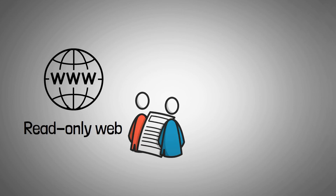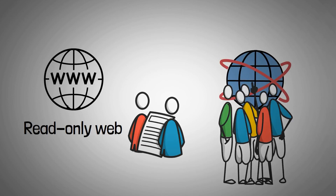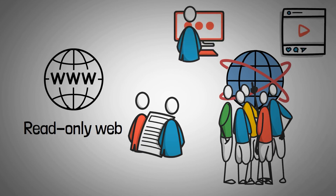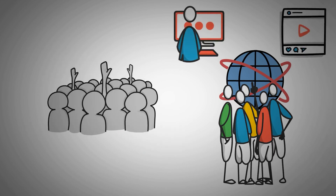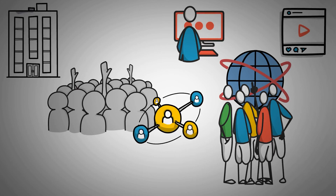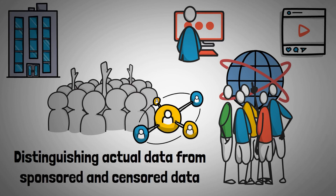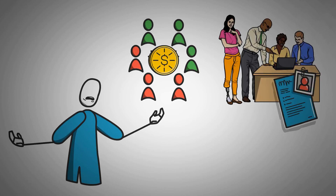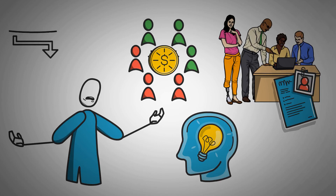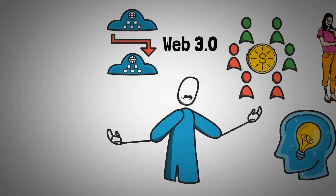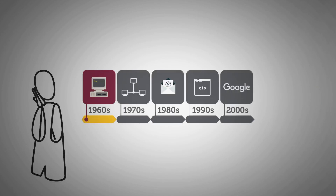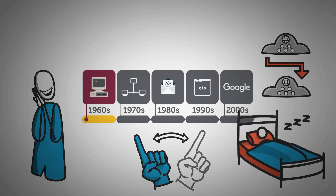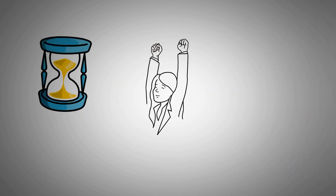In summary, Web 1.0 was merely a read-only web with a one-way flow of information. The arrival of Web 2.0 saw increased social collaboration between content creators and users, but the volume, variety, and velocity of data became so high — with control centralized to big tech — that distinguishing actual data from sponsored and censored data is nearly impossible. Concerns about centralized finances, reliance on big tech, and the need to share personal information have steered the world toward Web 3.0. The transition will not happen overnight, but it is expected to occur quickly enough for humans to adapt.